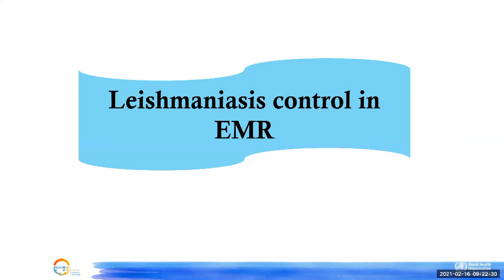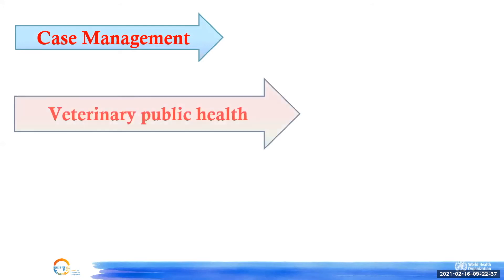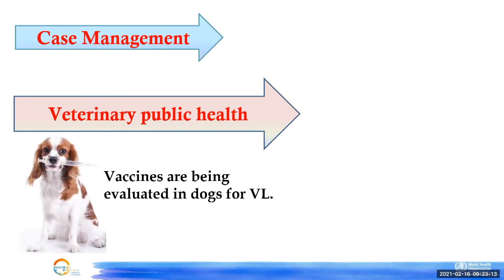What measures can we take to control leishmaniasis in our region? Case management is key — because cutaneous leishmaniasis caused by Leishmania tropica is an anthroponotic disease, early detection and treatment can control it. Veterinary public health is also important because there is an animal reservoir host in the parasite's life cycle; controlling this reservoir would significantly contribute to disease control.